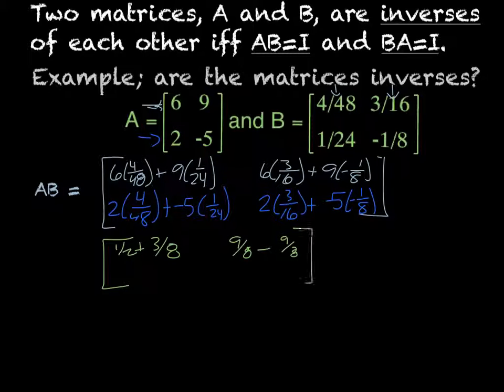And then we would get 1 sixth minus 5 twenty-fourths and 3 eighths plus 5 eighths. And then we simplify that